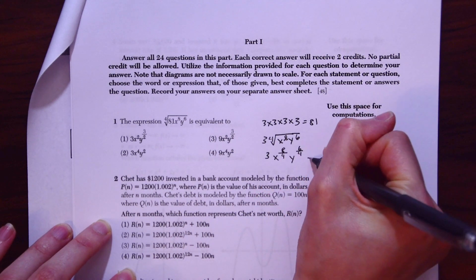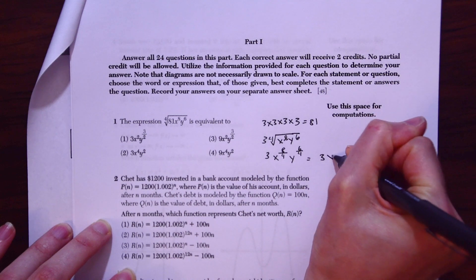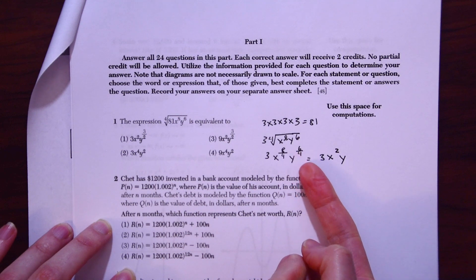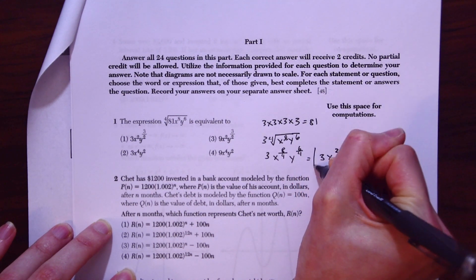And we could simplify these more. So now we get 3 and then 8 divided by 4 will just give us 2. So 3x squared times y. And then 6 divided by 4 can also be simplified, which will just give us 3 halves. And that's our answer.